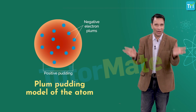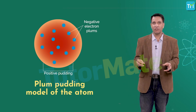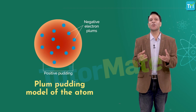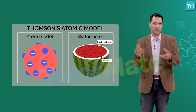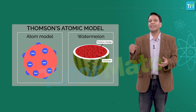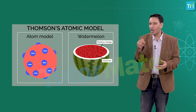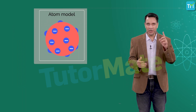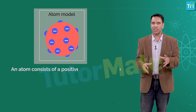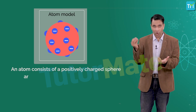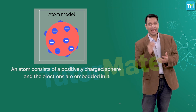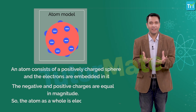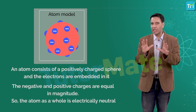The negatively charged plums were surrounded by positively charged pudding. We can also think of a watermelon — the positive charge is spread over the red edible part, while the electrons are embedded like seeds. Thomson's two key observations were: first, an atom consists of a positively charged sphere with electrons embedded in it; second, the negative and positive charges are equal in magnitude, making the atom electrically neutral.